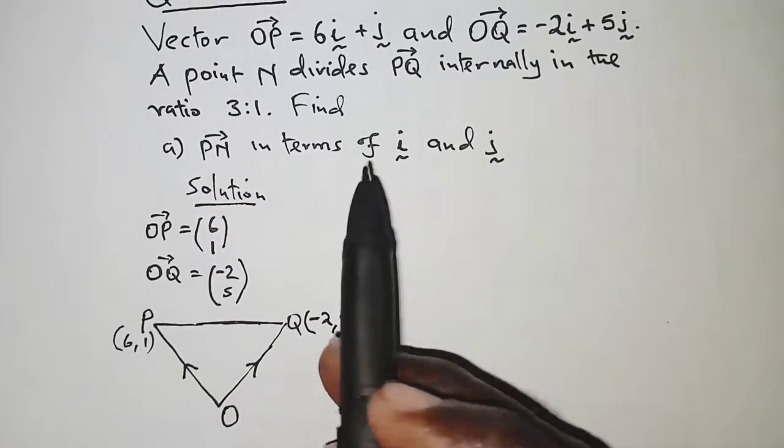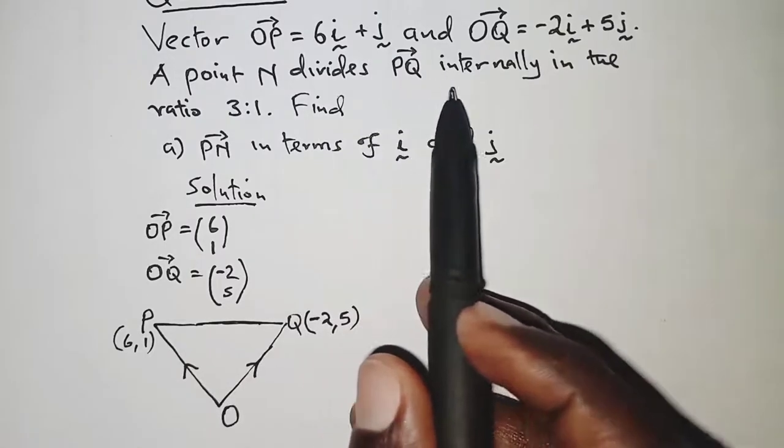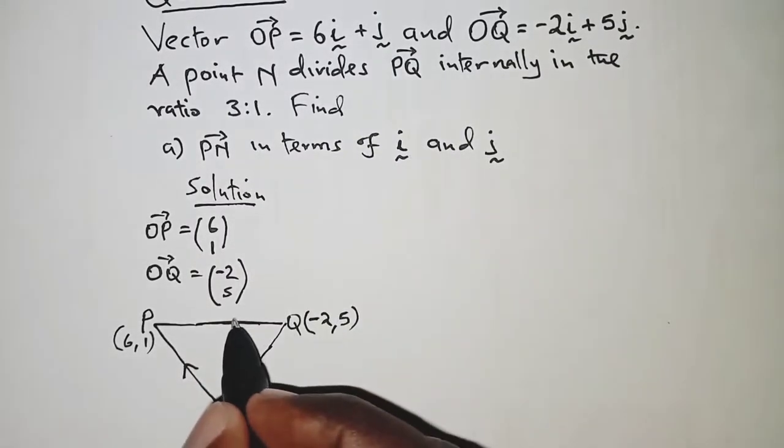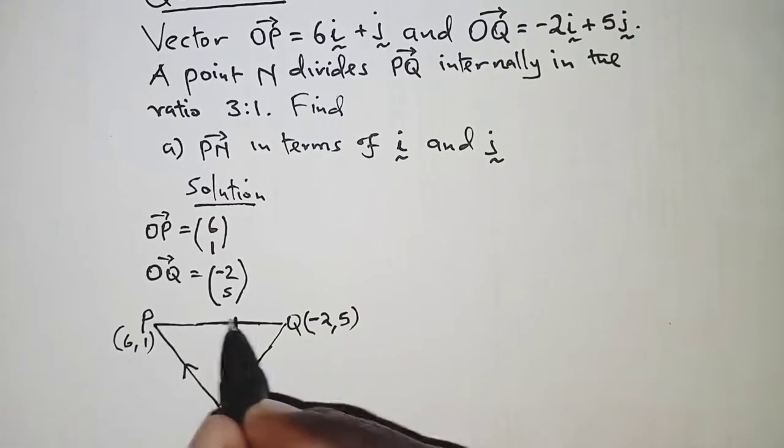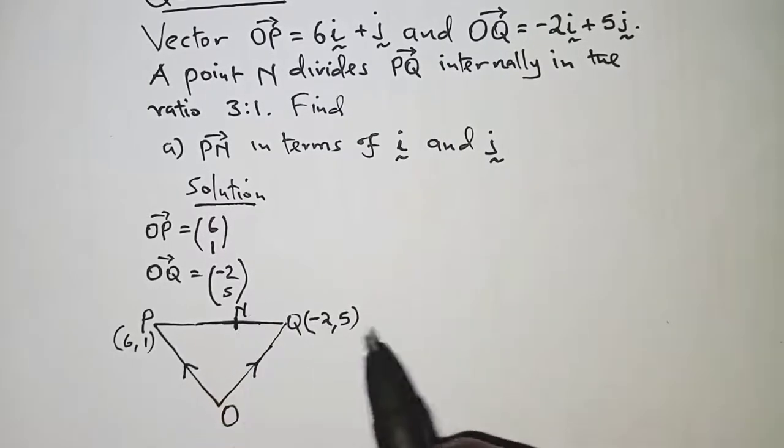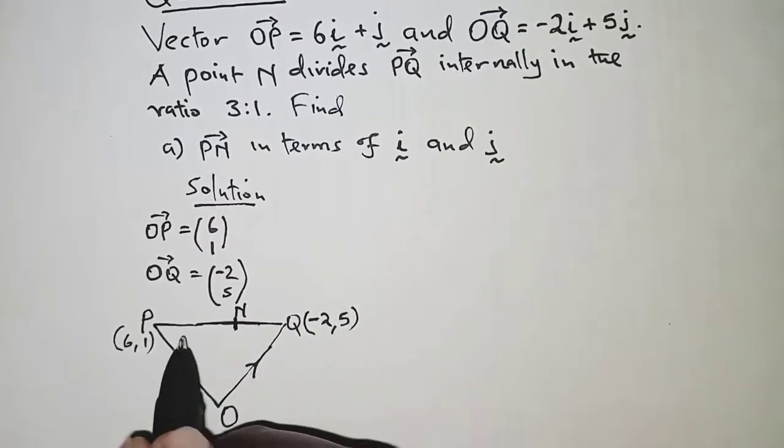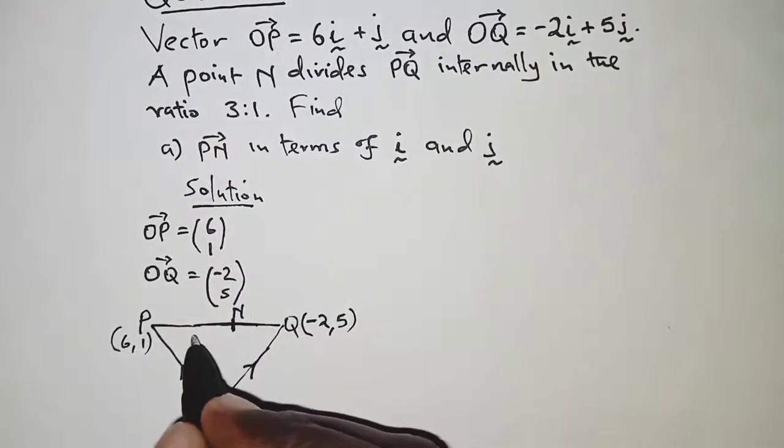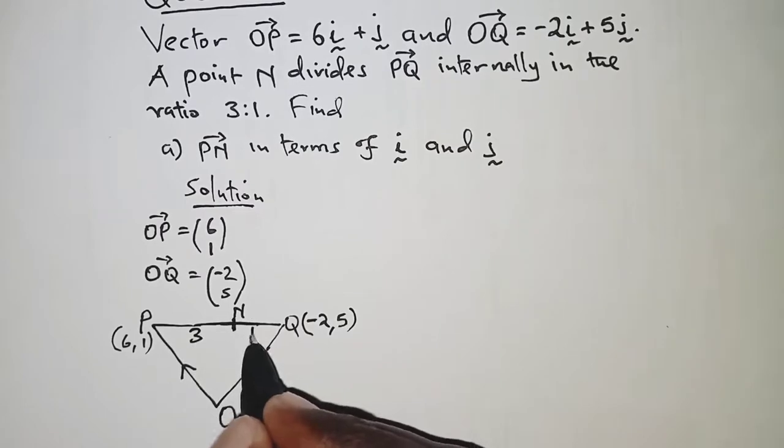So we've been told that a point N divides PQ internally in the ratio 3 to 1. So N is somewhere in between P and Q, so let's call it N, and then it divides it in the ratio 3 to 1.